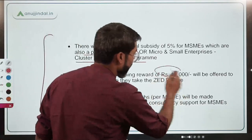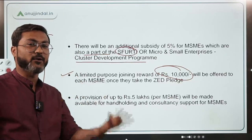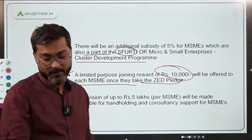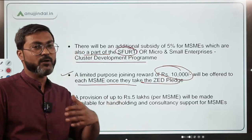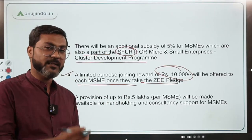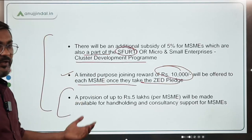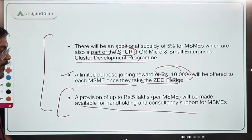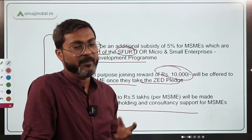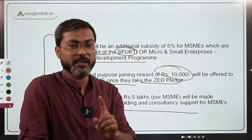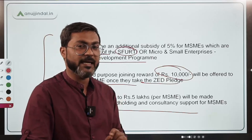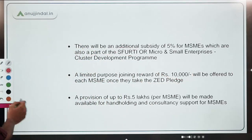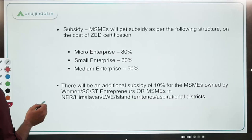A joining reward of rupees ten thousand will be offered to each MSME once they take the pledge to adopt Z Certification practices. Additionally, a provision of up to rupees five lakh per MSME will be made available for hand-holding and consultancy support. That covers the key details of this scheme.